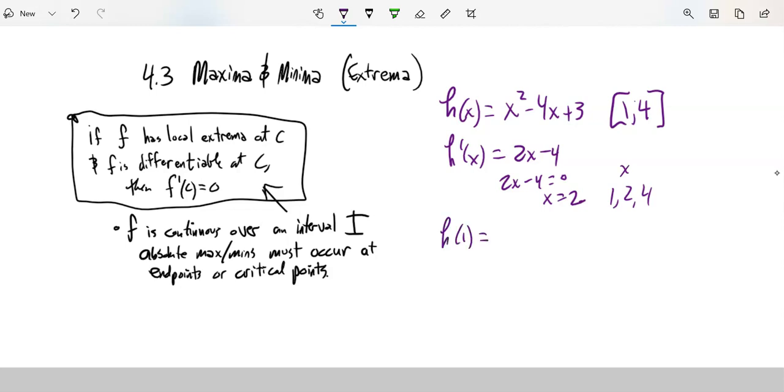H of 1. If I plug that in, that's a 0. H of 2. Again, I'm plugging it into the original equation. 4 minus 8 plus 3. That's a negative 1. Well, that's lower than that one. H of 4. 16 minus 16 plus 3 is 3. Great. So this looks like the lowest point. So 2 is where my minimum happens. And this is the highest point. So 4 is where my maximum happens.